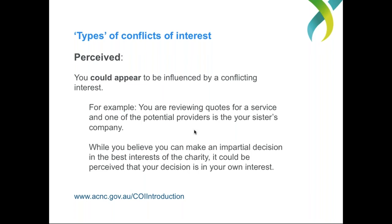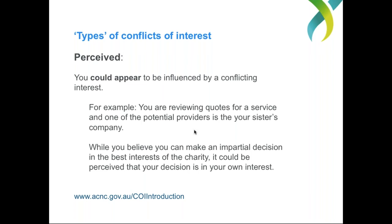This is one where the circumstances are such that there is a likelihood you'll be influenced. The third type is even more vague or nebulous — a perceived conflict of interest. This is where somebody else might see it as you being influenced by a conflicting interest. For example, you may be reviewing quotes for a service and one of the potential providers is the employer of your sister. While you believe you might be able to make an impartial decision in the best interests of your charity, it could be perceived by somebody else that the decision is being made in your own interest, as the employer employs your sister.